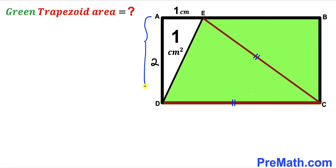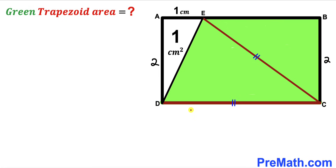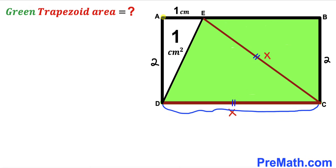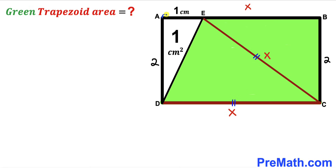Since side AD equals 2, side BC must also be 2 centimeters. Now let's label side CD as x centimeters. Then segment CE equals x as well. Since CD equals AB in the rectangle, AB equals x. And since AE equals 1, segment EB equals x minus 1.